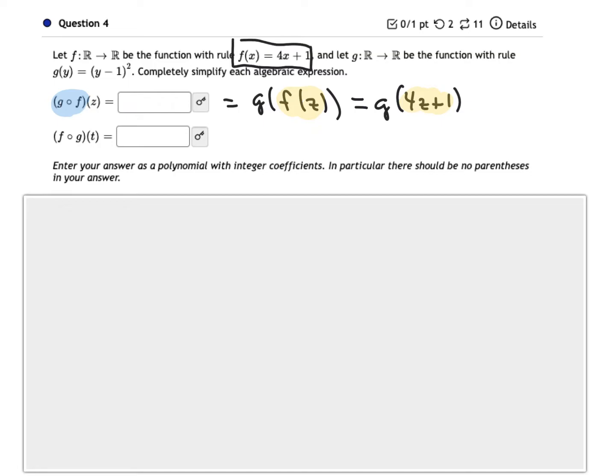So we just replaced the f of z with 4z plus 1. Now the problem says g of 4z plus 1. So I can now look for the rule for g.